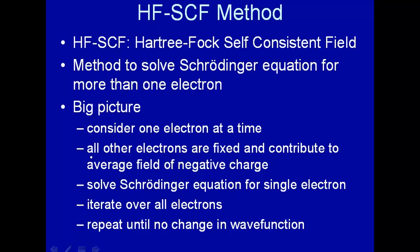Then you go to the next electron and you hold all the other electrons fixed, including the one you just solved to get a better one. Then you get a better solution for that electron. Then you go to the next electron, holding all the others fixed and so on. You cycle through all the electrons, doing one at a time while the others are fixed. As you do that, you get a wave function for each electron which is better.